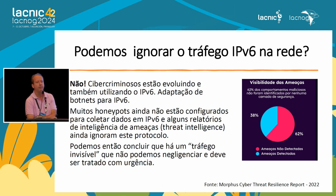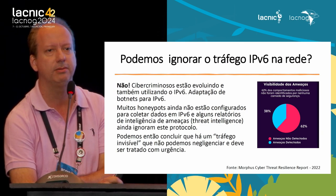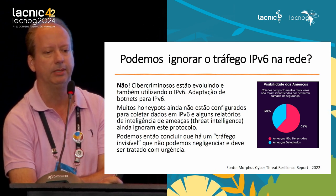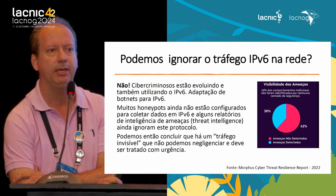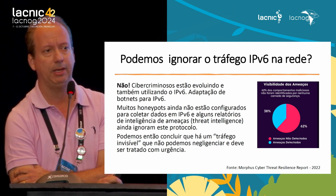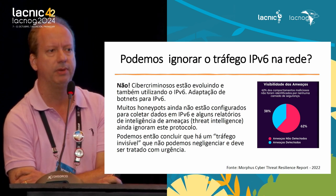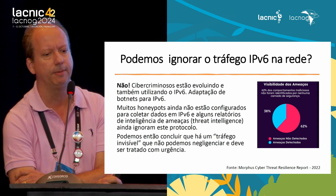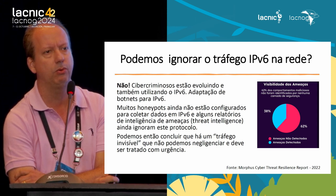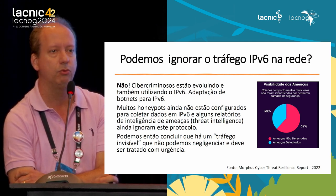Can we ignore the IPv6 traffic in the network? No. Cyber criminals may hide behind it, and although some are learning about IPv6, some botnet tools are also migrating and getting adapted to IPv6. Unfortunately, many honeypots are not configured to collect IPv6 data, and there is some threat intelligence that still ignores IPv6 in its reports. That's serious, because we conclude there is an invisible traffic that we shouldn't neglect — we should deal with it urgently.